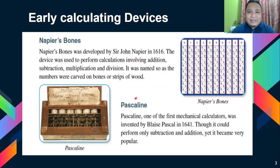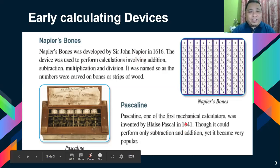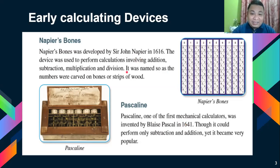The Pascaline — this is an example of the Pascaline. One of the first mechanical calculators, it was invented by Blaise Pascal in 1641. Though it could perform only subtraction and addition, it had become very popular. Imagine this being your cell phone — so big — back in 1641.